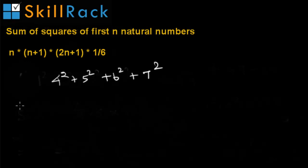Here we see 1, 2, 3 squares are missing. But we can write the above term as 1 squared plus 2 squared up to 7 squared minus 1 squared plus 2 squared plus 3 squared.